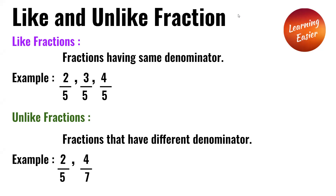A like fraction is a fraction that has the same denominator. Example: 2 over 5, 3 over 5, and 4 over 5. All three of them have the same denominator, which is 5.